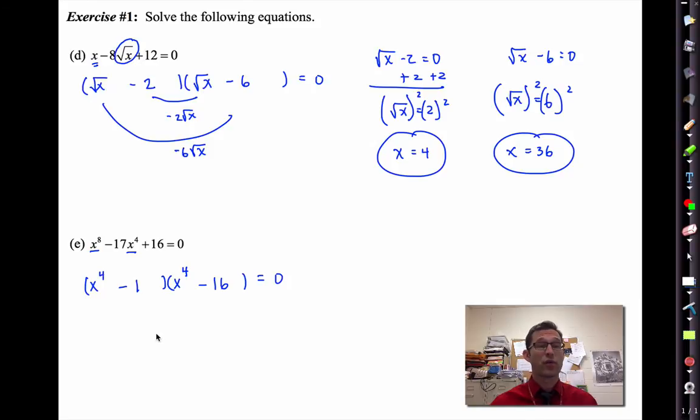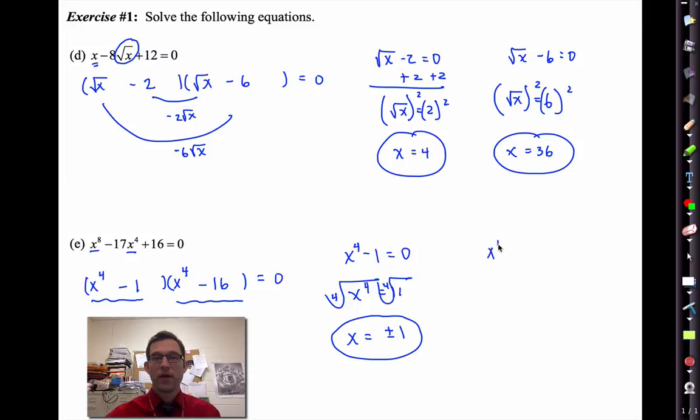We could continue to factor, there's nothing wrong with that, or since x only shows up once in each of these, we could go directly to x to the fourth minus one equals zero. X to the fourth equals one, and then we take the fourth root of both sides and get x equals plus or minus one. That's important. We'll get x to the fourth minus sixteen equals zero, x to the fourth equals sixteen, take the fourth root of both sides, and x will be plus or minus two.